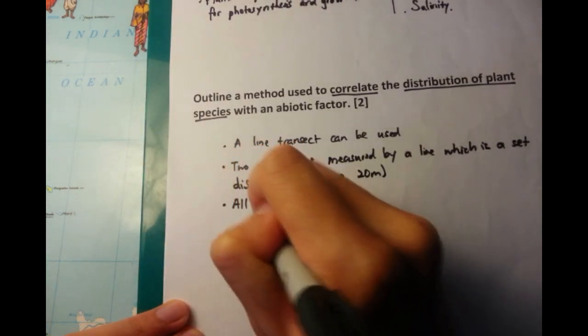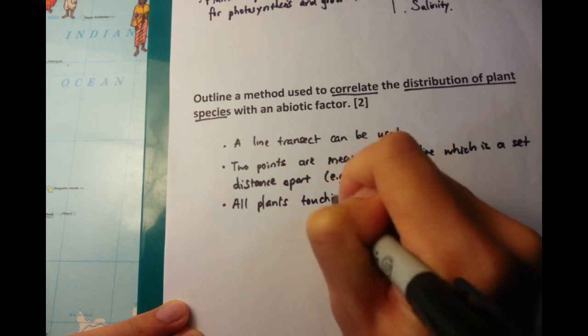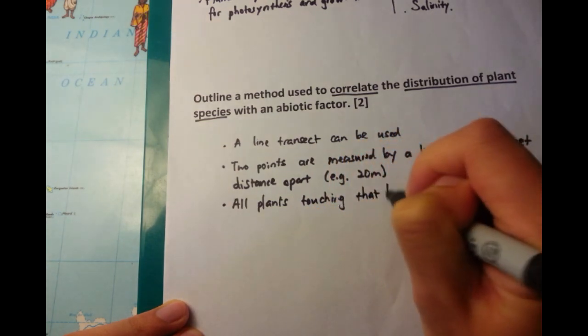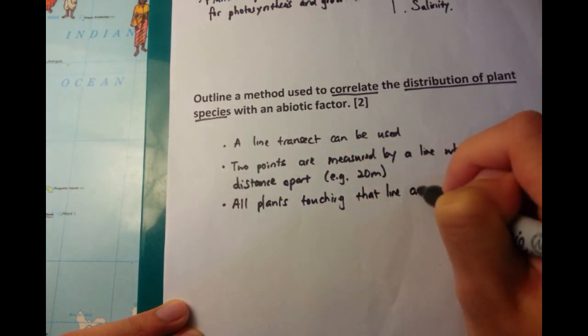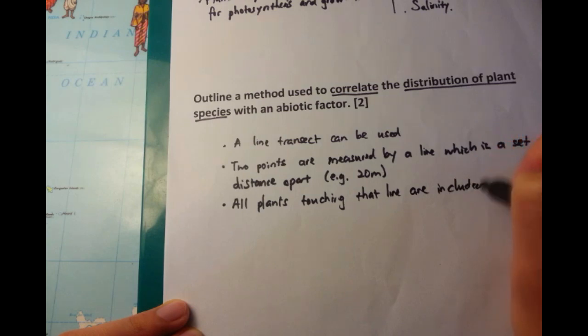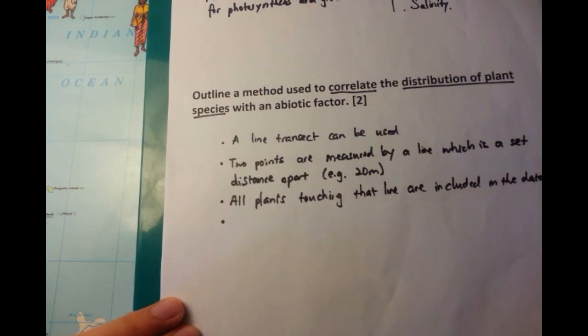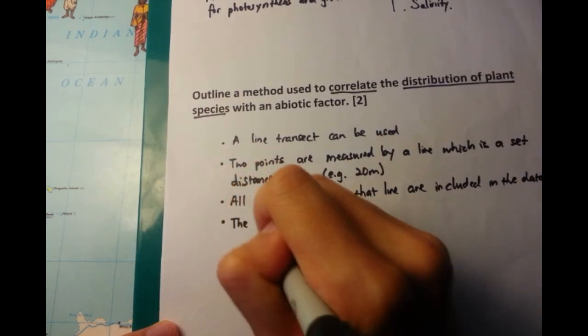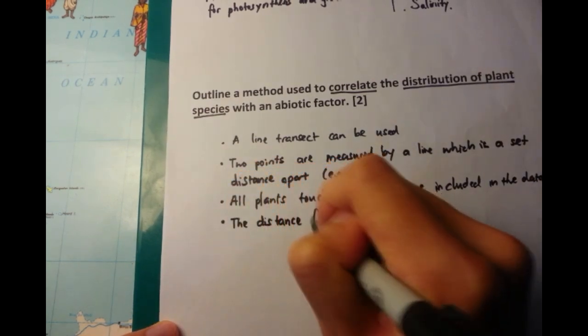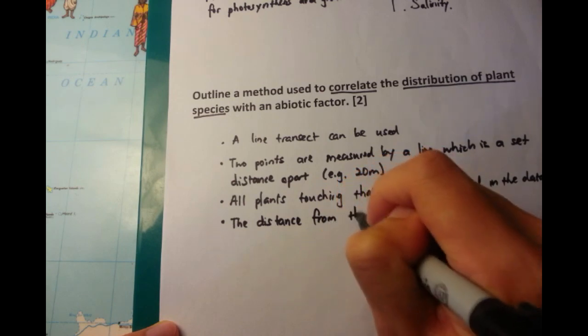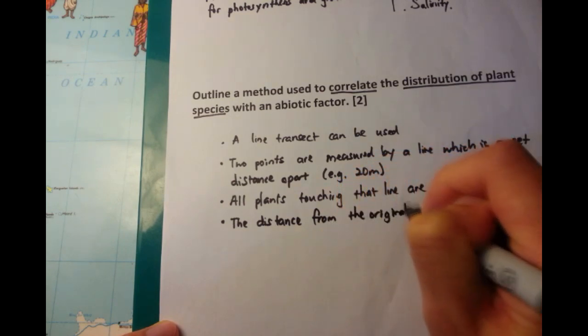All plants touching that line are included in the data. So if you have a little shrub which touches the line or a big tree which touches that line, then you include those particular plants in the data. After you've done that, then you measure the distance from point zero, how far the plant is found along that particular line.